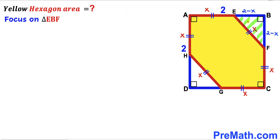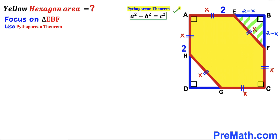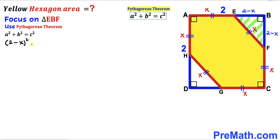Now let's focus on right triangle EBF and apply the Pythagorean theorem to solve for X. The Pythagorean theorem states A squared plus B squared equals C squared. In our case the hypotenuse is X, and our other two legs are each 2 minus X. Filling in the formula: (2 minus X)² plus (2 minus X)² equals X².